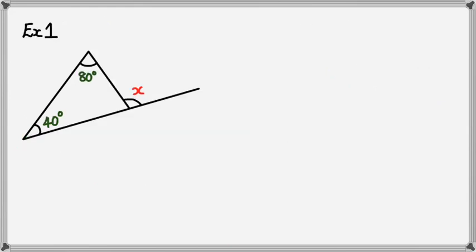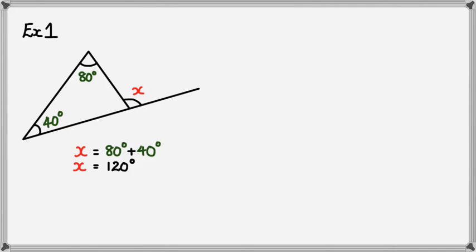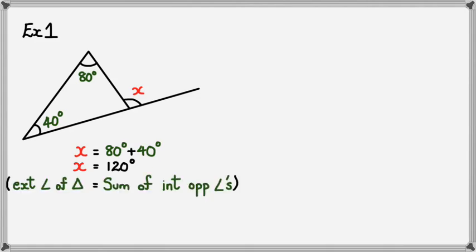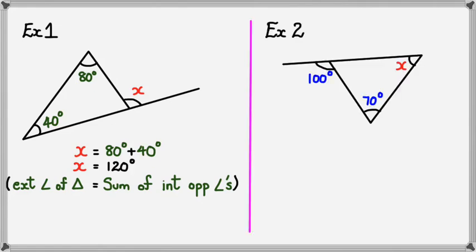Here's our first example: we need to figure out what X is. X is an exterior angle, and the two interior opposite angles are 80 and 40 degrees. So X equals 80 plus 40, which means X equals 120 degrees. Don't forget your geometric reasoning: exterior angle of a triangle equals sum of interior opposite angles.